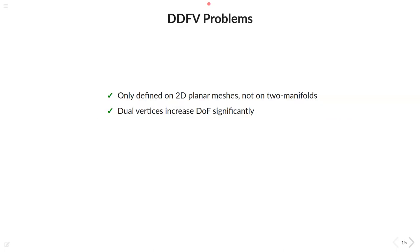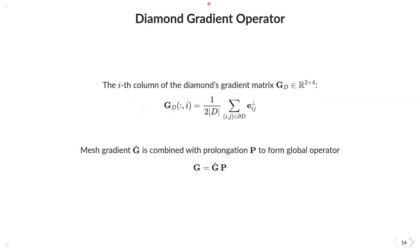And equipped with these constructions, we are then finally able to define our new polygon diamond operator. Because the local intrinsic gradient becomes now a two times four matrix per diamond, scaled by the area of the diamond. These are then collected into a global gradient matrix, here denoted as g hat, and we multiply it with a prolongation to obtain our global diamond gradient operator.